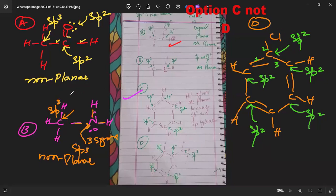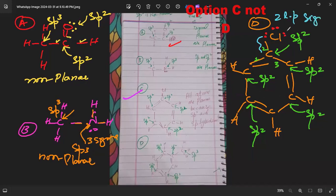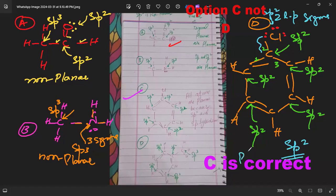Focusing on the chlorine: it has three lone pairs, and one of those lone pairs is involved in delocalization within the ring, leaving two lone pairs and one sigma bond — so chlorine is also sp2 hybridized. Since every atom in option D is sp2 hybridized, the entire molecule is planar.